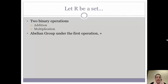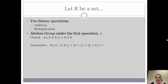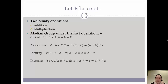In order to be a ring, this set must be an abelian group under the first operation. To be an abelian group, the set must be closed — which means for all elements in the set, if you add two elements together you remain in the set. It must be associative. You must have an identity element. Each element must have an inverse. And in order to be an abelian group, we also have to be commutative.